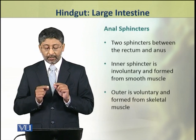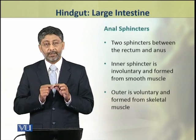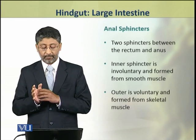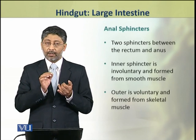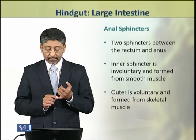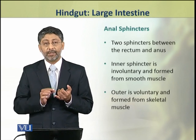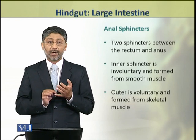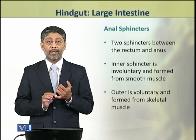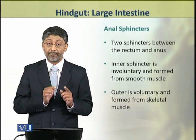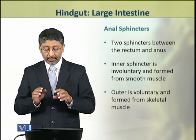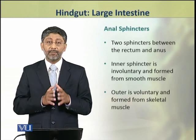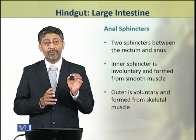Dear students, there are two sphincters lying between the rectum and anus. The first is the inner sphincter and the second is the outer sphincter. The inner sphincter is composed of smooth muscles and is involuntary, while the outer sphincter is made up of skeletal muscles.